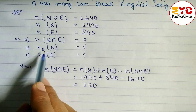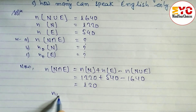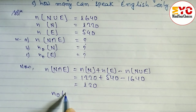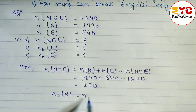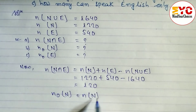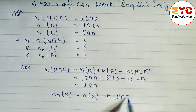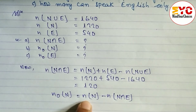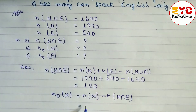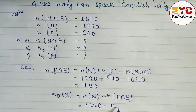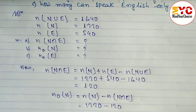Next, to find only Nepali speakers, we use the formula: N(only N) = N(N) − N(N∩E). So 1220 − 120 = 1100. The number of people who speak Nepali only is 1100.